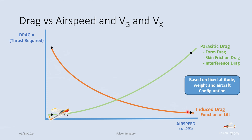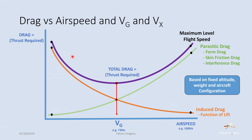At slow airspeeds we have a high angle of attack but are going very slow; as we increase airspeed, angle of attack gets smaller while parasitic drag increases as the square of the airspeed. If we take the sum of parasitic drag and induced drag and plot it along the airspeed axis, we get total drag — or total thrust required — representing what's needed for the aircraft to fly. At the lowest point of this curve we have the least overall drag, and thus the aircraft can sustain flight the longest with the least power. This is known as best glide, or VG — 73 knots in the example of a Piper Warrior.